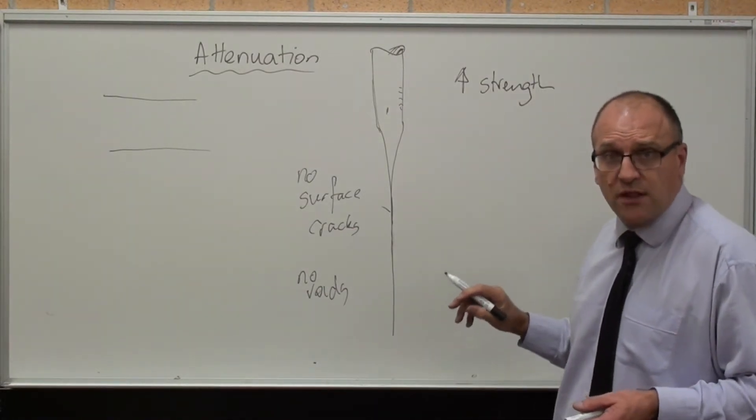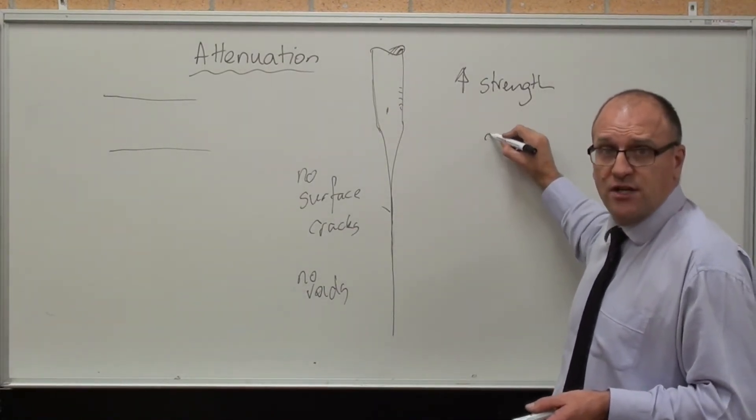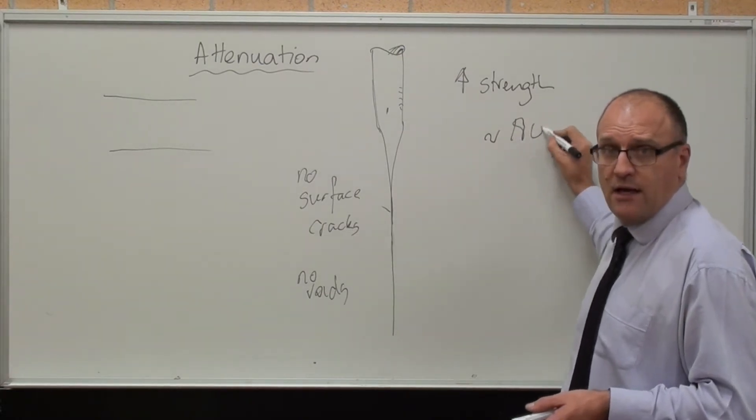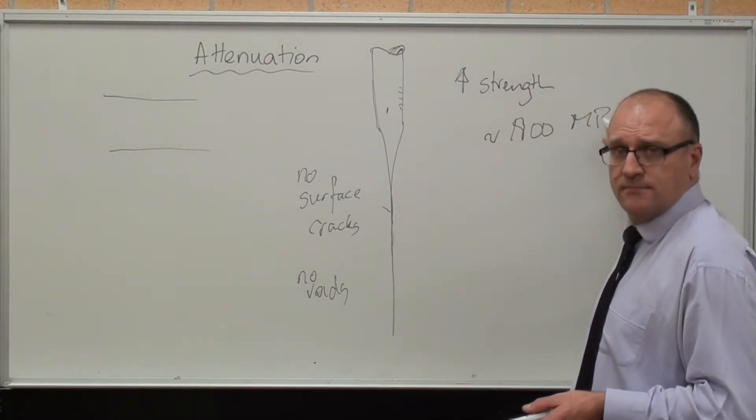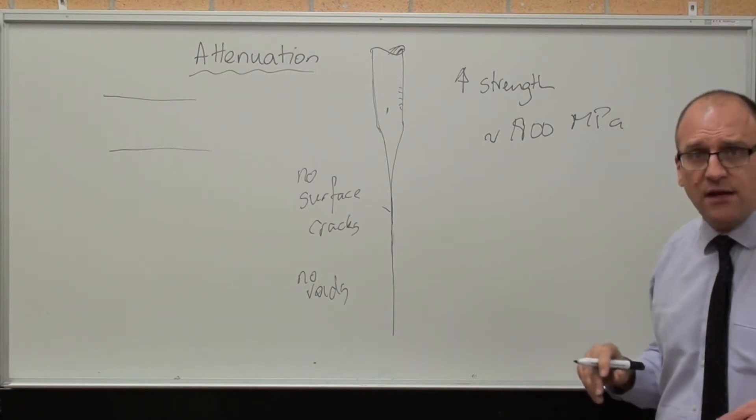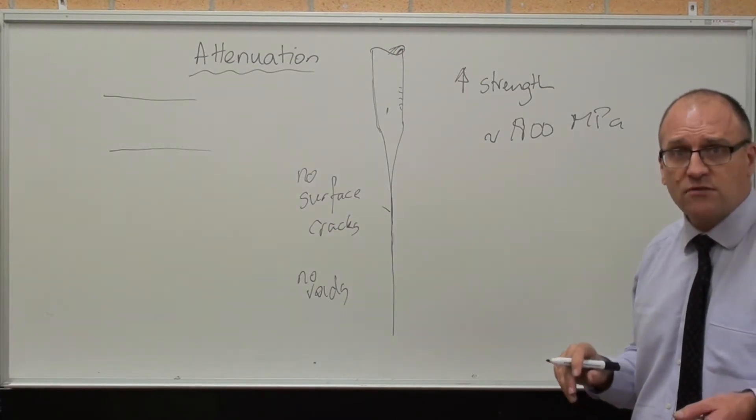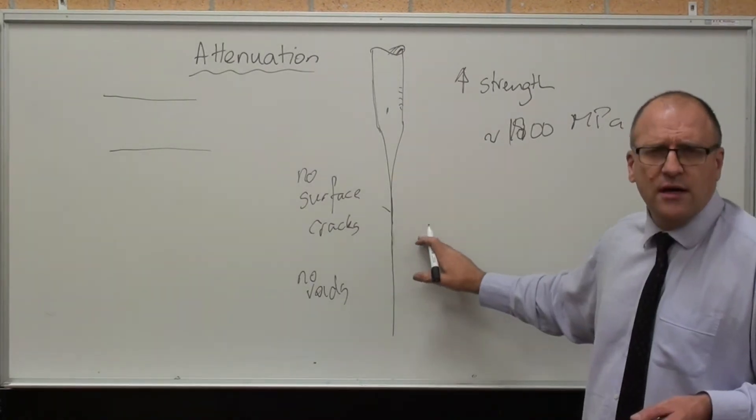I haven't googled the strength of a glass fibre, but I imagine it's in the range of around about 1800 megapascals, because it doesn't have a defect and it's a brittle high strength solid.